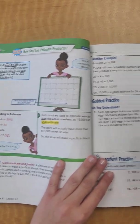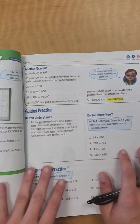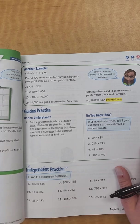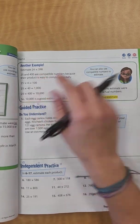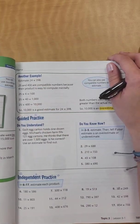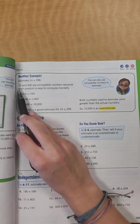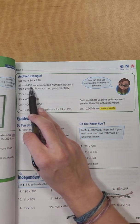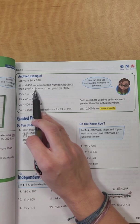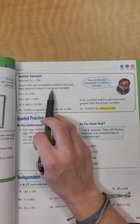All right, let's go to another example on the next page. This one says, estimate 24 and 398. So this one, 25 and 400 are compatible numbers, because their products are easy to compute mentally.